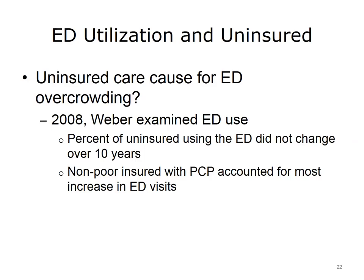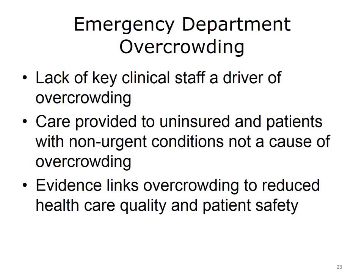However, in 2008, Weber published a retrospective study and found that the percentage of uninsured using the Emergency Department did not change over 10 years. The research found that most of the increase was due to non-poor insured individuals with a primary care physician using the ED for non-urgent care. A 2009 Robert Wood Johnson study found that the lack of key ED staff is the primary cause of overcrowding, not overuse by the uninsured. This overcrowding is associated with decreased quality of care, longer waiting periods, and reduced patient safety.